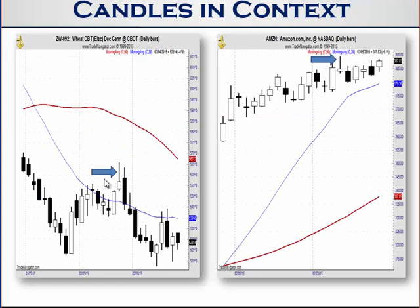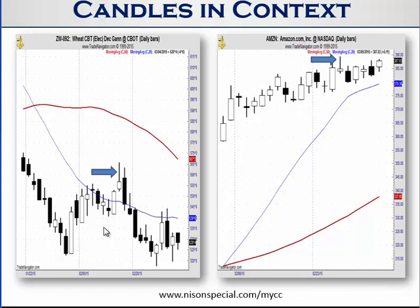Here we have a couple of shooting stars at the blue arrows, taken from one of our recent market updates. For those who are members of MyCandleCharts.com, we do markets of your choice and market updates every day. If you're not a member and want to find out more, the link is nissonspecial.com/mycc — you'll also see how to get flashcards, other bonuses, and a free copy of my book. Now, back to the chart: the blue line is the 20-day moving average and the other is the 50-day. Here the 20 is well below the 50, and both are sloping down.